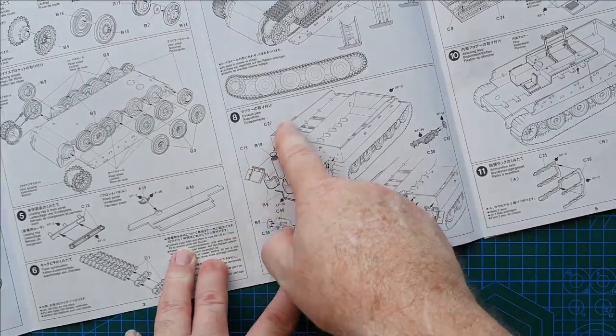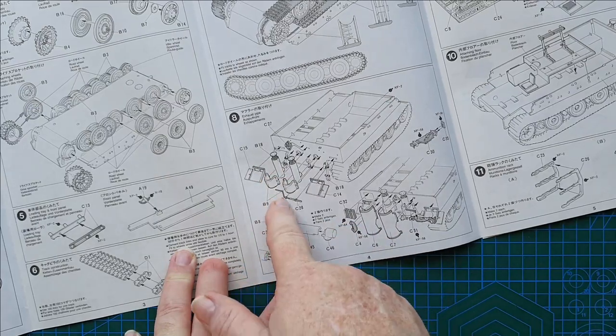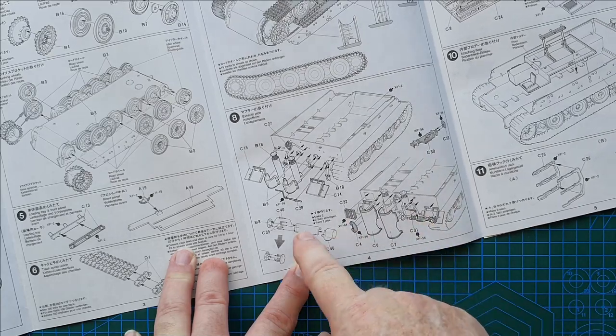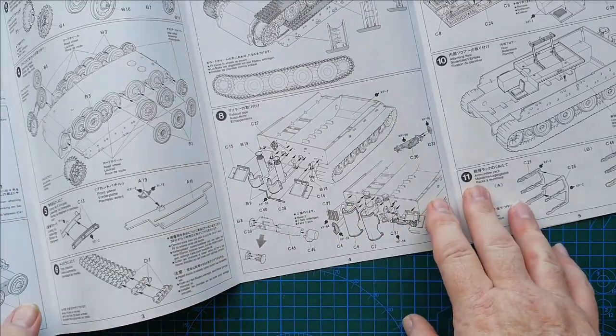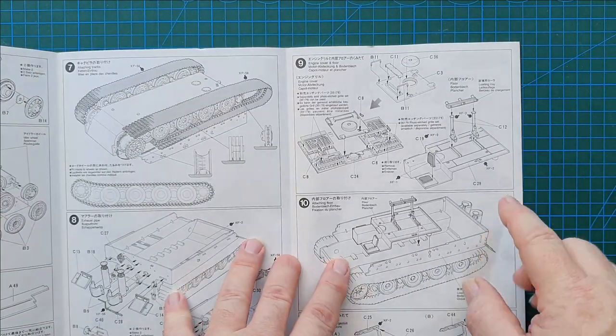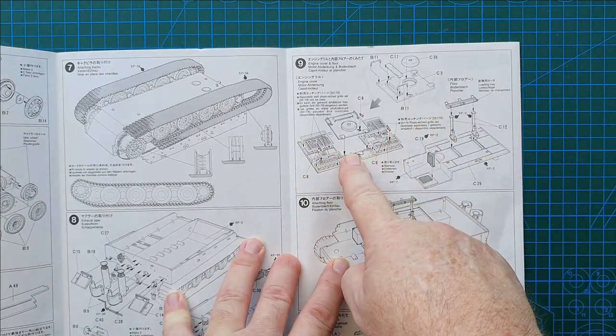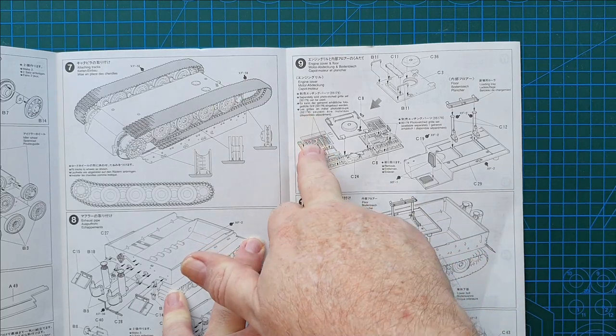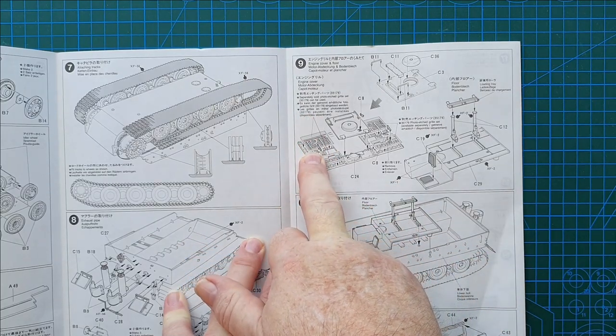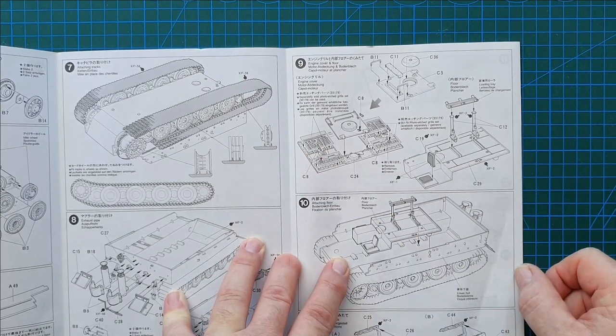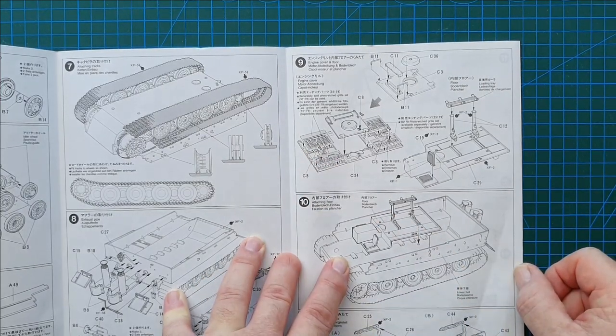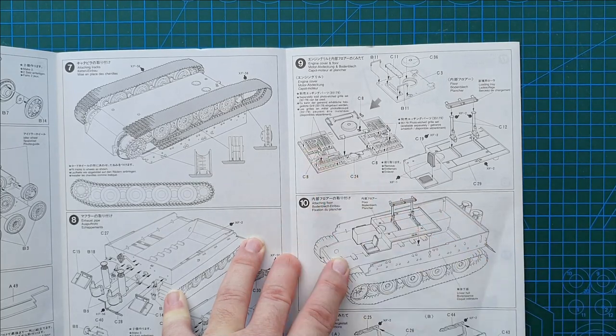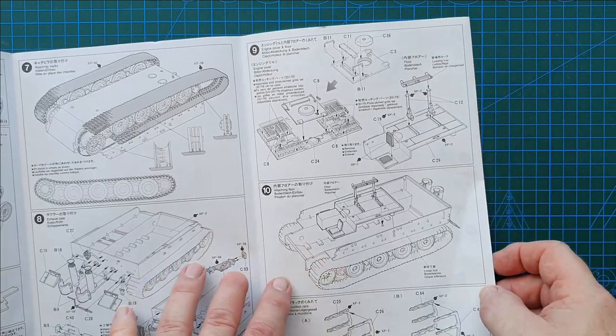Then we carry on. Step eight - exhaust pipes, armored covers, rear mudguards, jack and fittings going on. Fairly straightforward, very similar to a Tiger tank. Rear engine deck. The only thing I didn't get with this is rear engine deck grills. That will be my next purchase for this Sturmtiger. We'll have to have a look out for those.